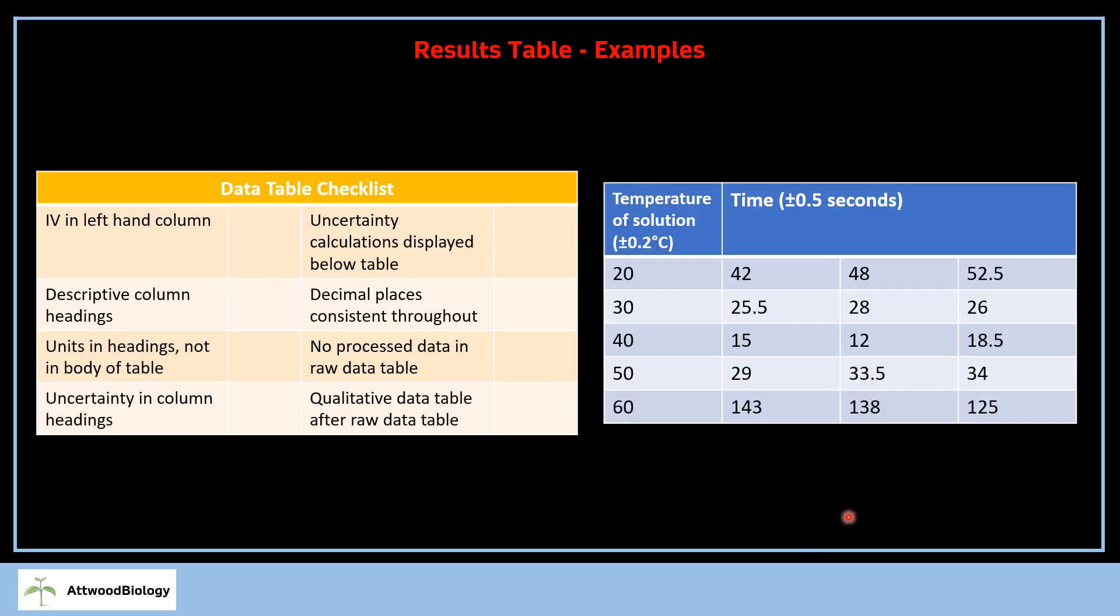If this is our data table here, remember you need at least 25 pieces of data. We recommend five manipulations of the independent variable and five repeats. Already we haven't got five repeats, which is ideal. We do have the independent variable in the left-hand column. We have units in the headings and not in the body of the table—you can see degree C and seconds in headings, not within the table body, which is good. We've also got uncertainty in the column headings. There's a slide later on about calculating uncertainty.